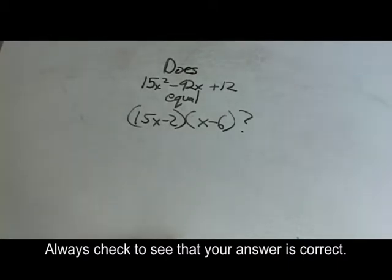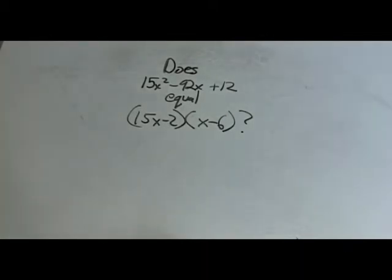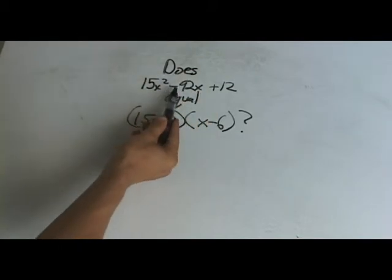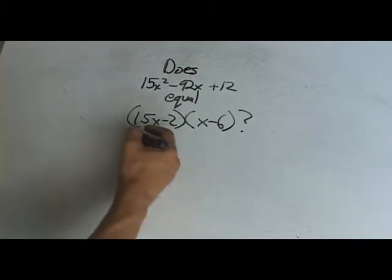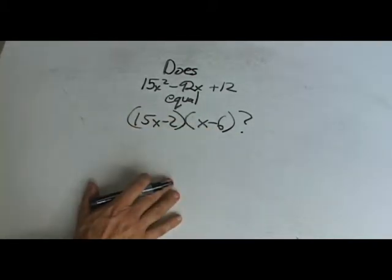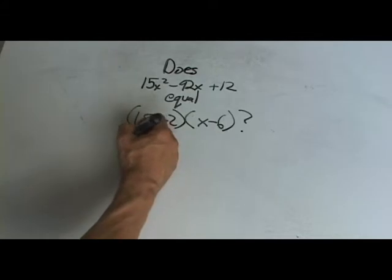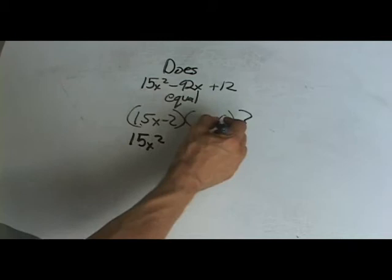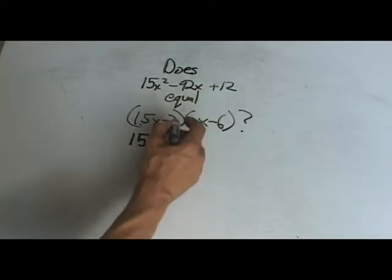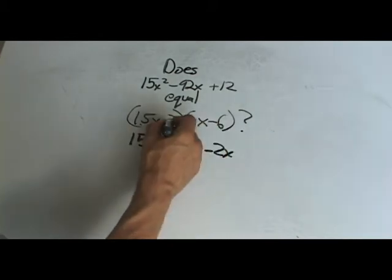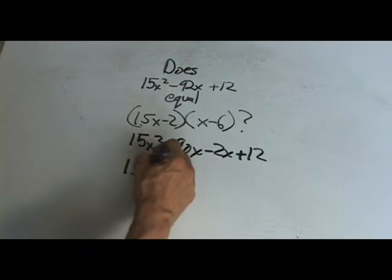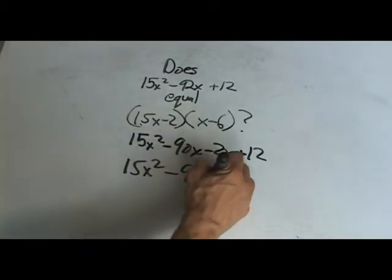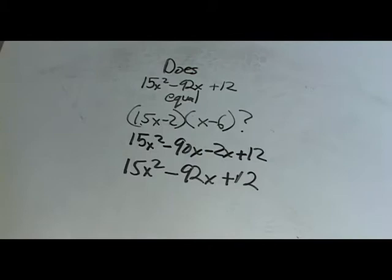Okay. So now that it seems like you've got the right answer, you can always test it. Does 15x squared minus 92x plus 12 equal 15x minus 2 times x minus 6? And you can either foil it or you can use the box. If you use foil, you go like this. You just say 15x times x, which equals 15x squared. And 15x times negative 6 makes it negative 90x. And negative 2 times x makes it negative 2x. And negative 2 times negative 6 is positive 12. And you end up with, of course, 15x squared minus 92x plus 12. So it does work.